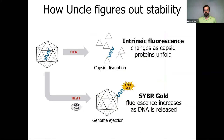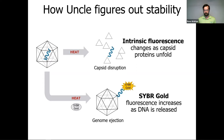UNCLE uses intrinsic fluorescence to measure changes in capsid proteins as they unfold, allowing us to look at capsid disruption and assign a Tm to that process. It also uses SYBR Gold — or really any DNA-sensitive fluorescent dye — to look at genome ejection. These dyes have very low fluorescence when not bound to DNA, but when they come in contact with ejected DNA, the fluorescence increases by a huge amount, and UNCLE can detect that increase in fluorescence emission. UNCLE is the only tool with full-spectrum fluorescence that can look at both intrinsic fluorescence and dye-based methods in one box.